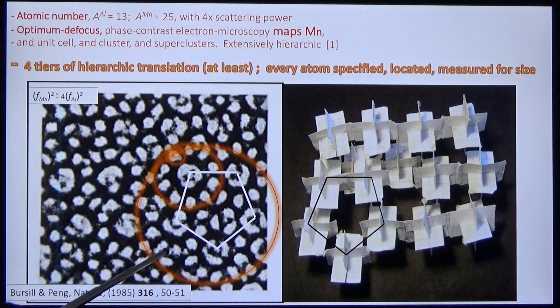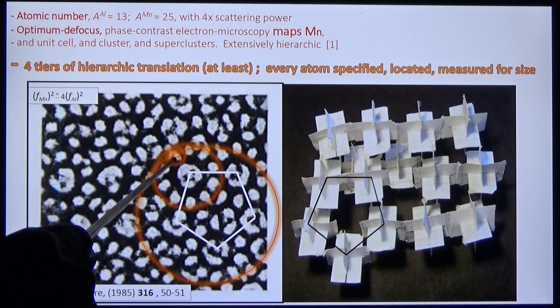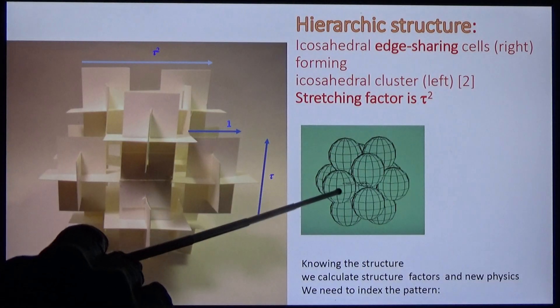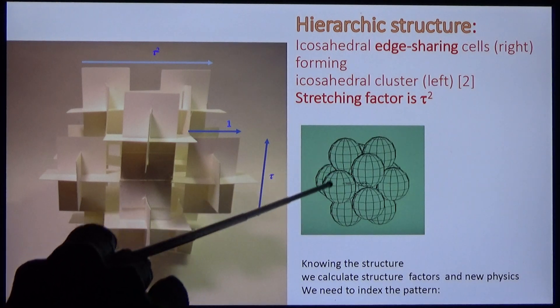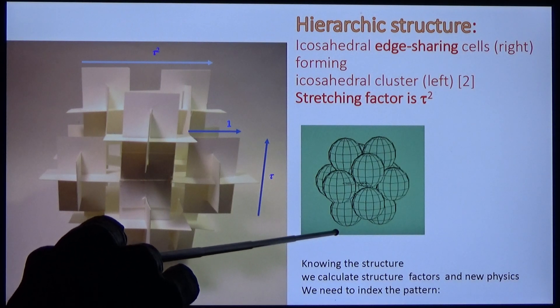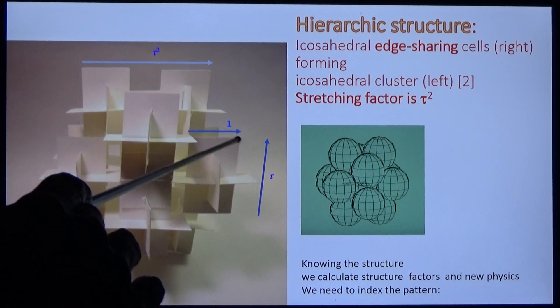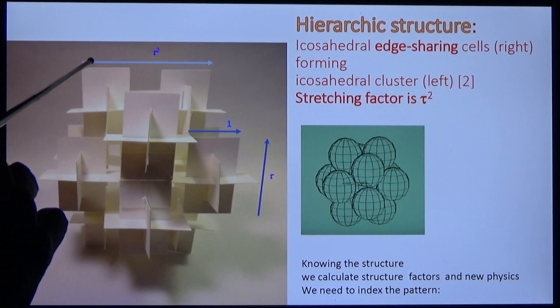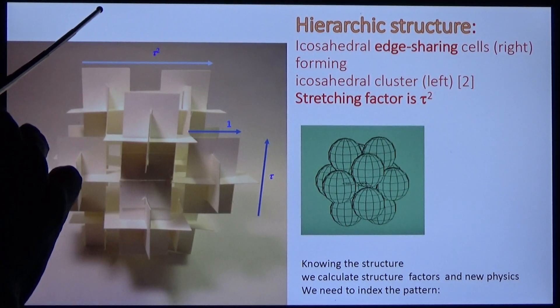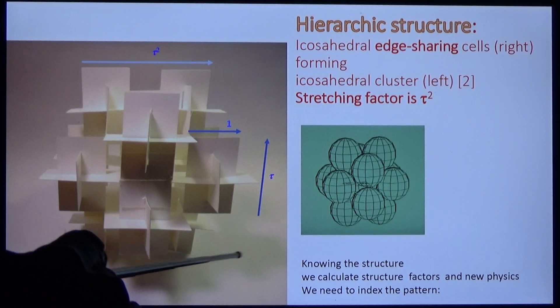You are looking at a hierarchy of icosahedral structures, four tiers deep—1, 2, 3, 4—and infinitely extensible. The second tier is extremely dense, it's edge-sharing, so the stoichiometry is aluminum 6 manganese, like the original melt. Notice that the unit edge width of the icosahedral unit cell stretches to tau squared in the icosahedral cluster, and in the supercluster tau to the power of 4, as you saw it in the micrograph. This is logarithmically periodic with period tau squared.